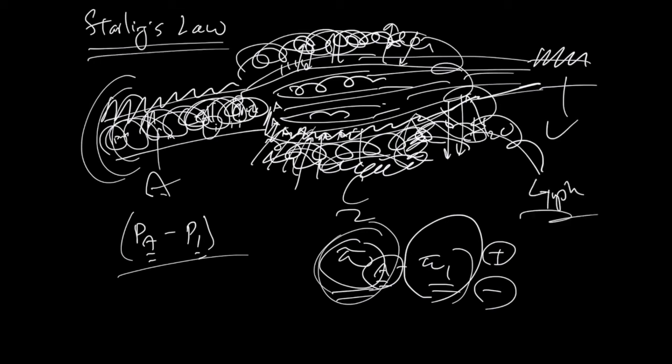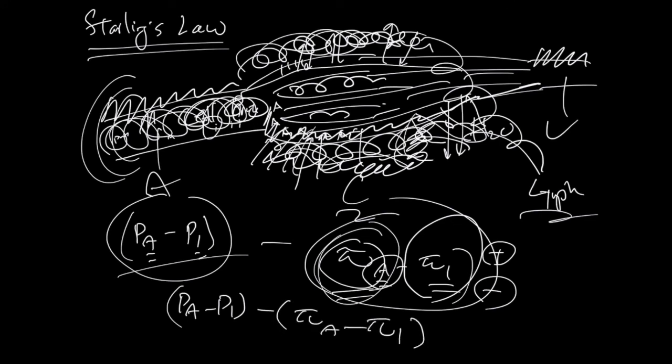Starling's law is basically this term minus this term. PA minus PI tells you who has a stronger hydrostatic pressure, minus the colloid pressure of the vessel, minus the colloid pressure of the interstitium. Unit of this is going to be pressure.